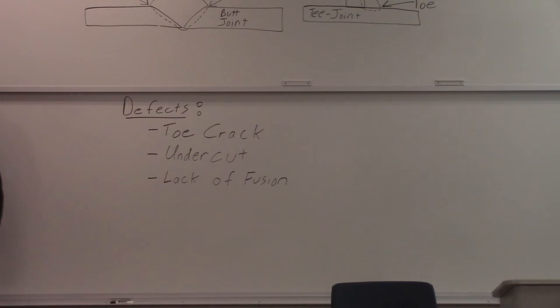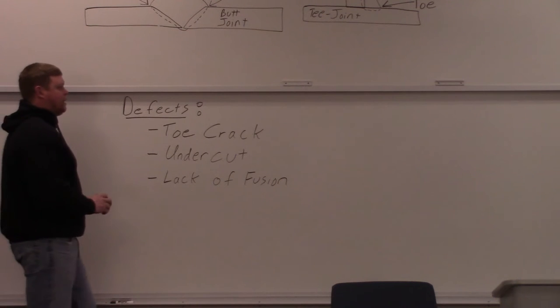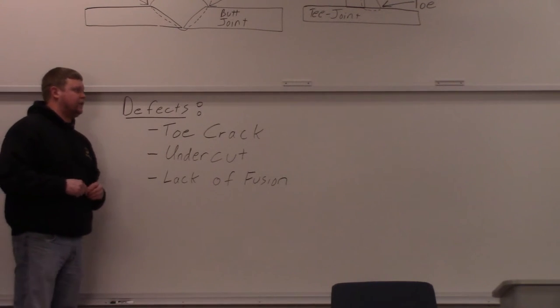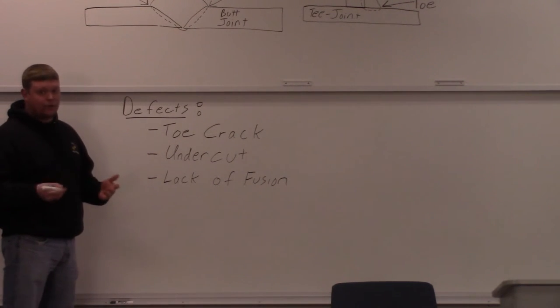A toe crack is kind of a major defect. The definition of toe crack is a crack in the base metal beginning at the toe of the weld. That's why it's so important to know where the toe is.